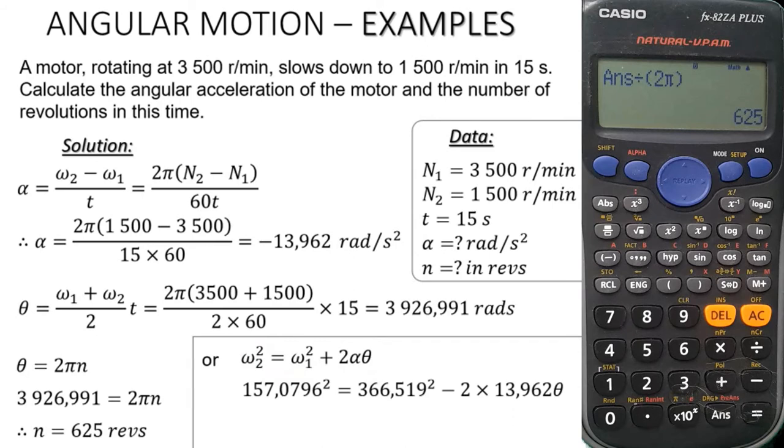Then we can just find our omegas. Omega 1 and omega 2. And then we do the substitution. If you first calculate your omegas, you will find them like this. You do your substitution. After doing your substitution, you just find your theta.